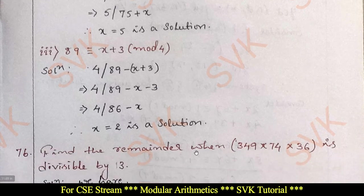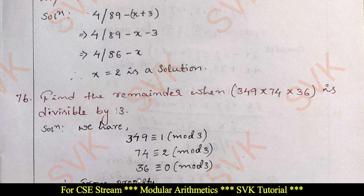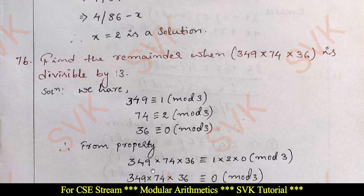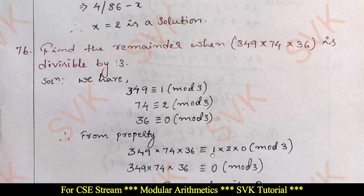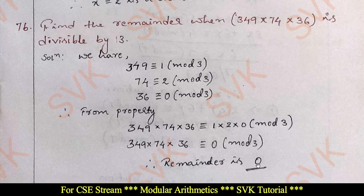Moving on to question number 7b: find the remainder when 349 × 74 × 36 is divided by 3. The solution: 349 ≡ 1 (mod 3), 74 ≡ 2 (mod 3), and 36 ≡ 0 (mod 3). From the multiplication property, 349 × 74 × 36 ≡ 1 × 2 × 0 (mod 3). Since 1 × 2 × 0 equals 0, the remainder is 0.